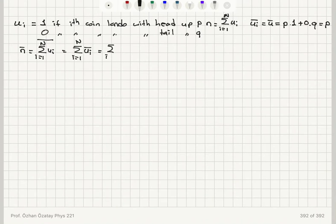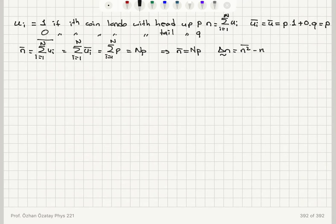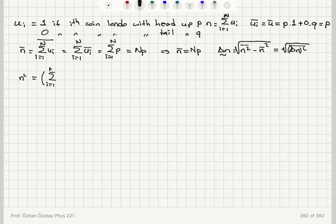So this would be the sum from i equals 1 to N of p, which is N p. I have shown that n-bar is N p. For the standard deviation we have the square root of n-squared-bar minus n-bar squared — that is actually the variance of n. For n-squared we have the sum from i equals 1 to N of u_i multiplied by the sum from j equals 1 to N of u_j.